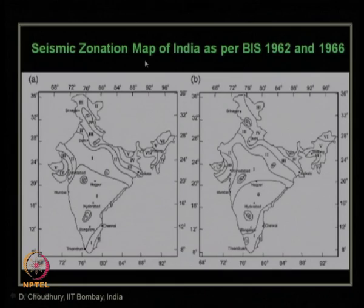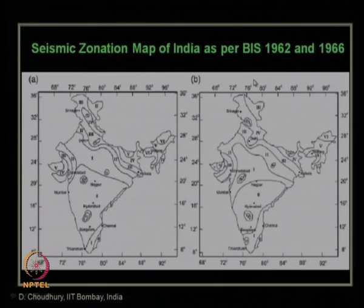Now, coming to the development of the Indian seismic code. The Indian seismic code IS 1893 part 1 has been revised over the years. Whenever a major earthquake occurred and the research and practicing community felt the seismic zonation needed updating, changes were made. The latest revision was in 2002, following the 2001 Bhuj earthquake.